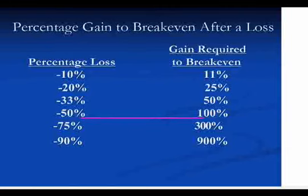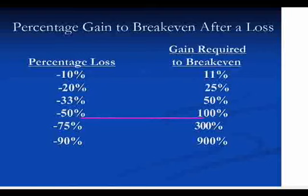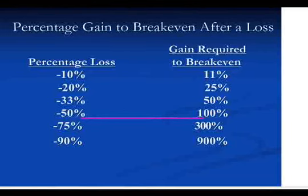Why not just use a 10% stop loss on an option? A lot of times you might see an option that's bid two, offered $2.20 — it might have a 10% bid-ask spread right away. So you've got to give yourself a little bit of wiggle room. We tend to use something in the 25% to 30% range for a slightly in-the-money type of situation as a general rule of thumb.